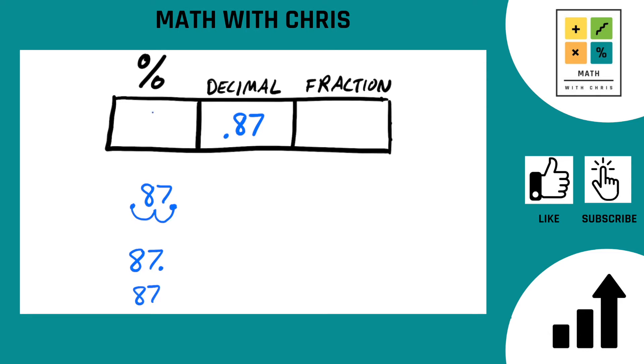That's finished. 0.87 is 87 percent. Done on that part. Now when we need to find the fraction, we take the decimal 0.87. Let's put it over here. Let's go ahead and drop the decimal for a second.